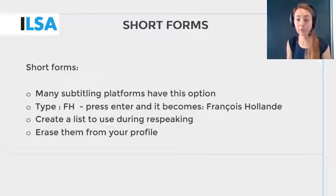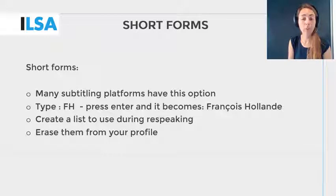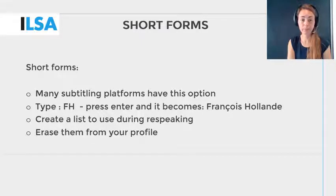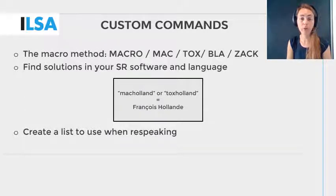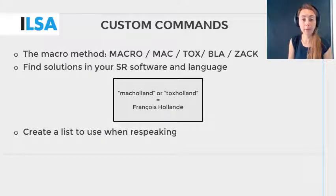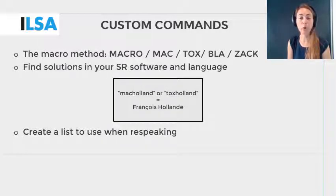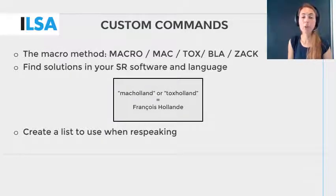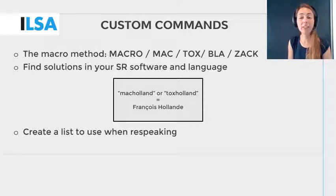For example, if you have prepared a list of short forms and your list contains the abbreviation FH linked to the name François Hollande, then the name François Hollande will appear whenever you type FH and then press the space bar. There is also a way to create short forms with your voice by making custom commands in the speech recognition software. One way of doing this is to use the macro method, which means adding either TOX, macro, or mac before or after the spoken form of a word. The sound used can vary between languages, as bla and zack can also be used. Using a TOX or macro method means that you can teach the speech recognition software to display a name such as François Hollande each time you dictate TOX holland, holland macro, or mac holland.